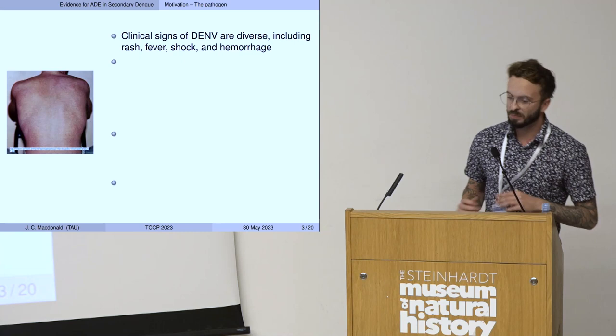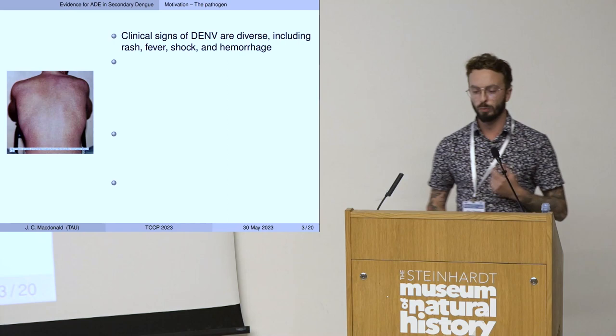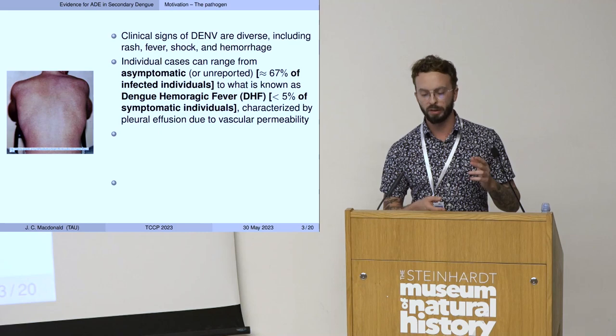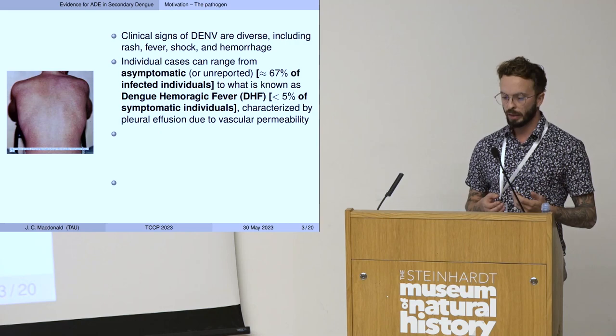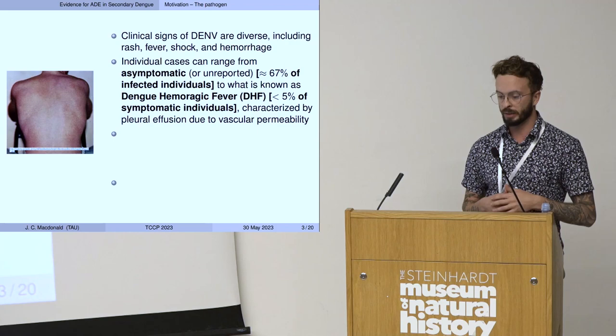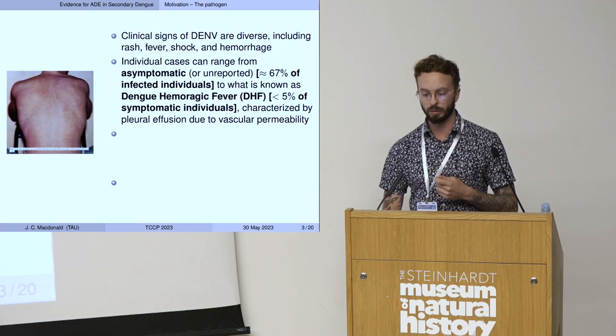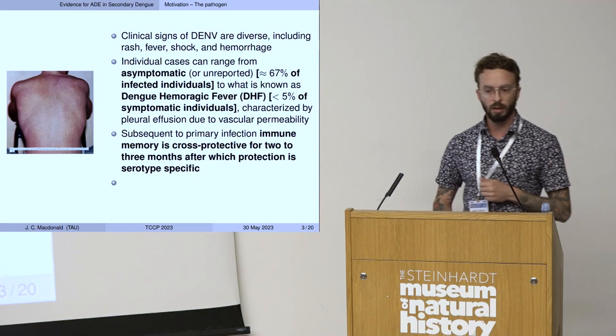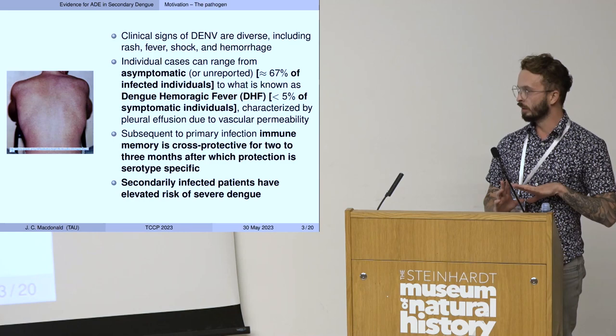The clinical signs of dengue virus are diverse and can include rash, fever, shock, and hemorrhage. Individual cases range widely in severity — from asymptomatic or unreported, thought to be about two-thirds of infected individuals, to dengue hemorrhagic fever, which is less than five percent of symptomatic individuals and is characterized by pleural effusion due to vascular permeability. Subsequent to primary infection, immune memory is cross-protective for two or three months, after which protection is serotype-specific.